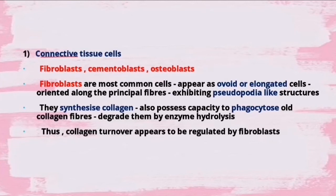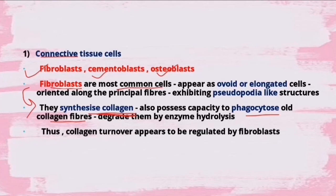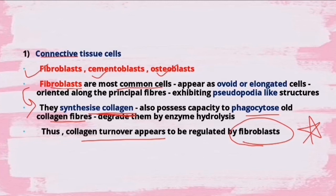The connective tissue cells are fibroblasts, cementoblasts, and osteoblasts. Among these three, fibroblasts are the most common cells and are very important because they synthesize collagen. They also possess the capacity to phagocytose old collagen fibers and degrade them by enzyme hydrolysis. Therefore, collagen turnover appears to be regulated by fibroblasts - they can both synthesize collagen and degrade old ones.